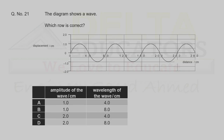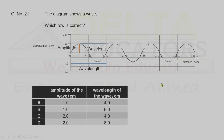Question 21. A wave diagram is shown. Amplitude is the vertical distance from mean to peak position, which is 1 cm — given in options A and B. Wavelength is the distance between two consecutive crests, which is 8 cm. Amplitude = 1 cm and wavelength = 8 cm. Correct option is B.